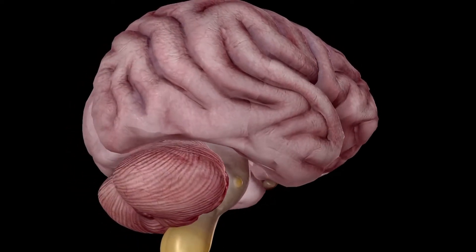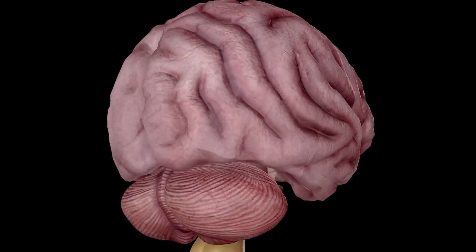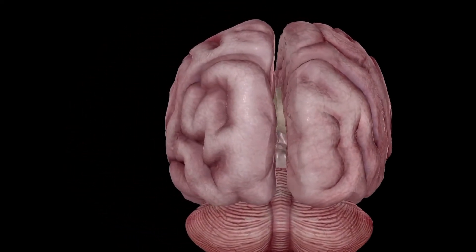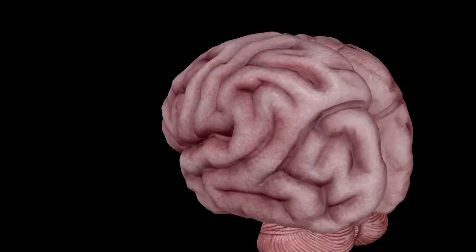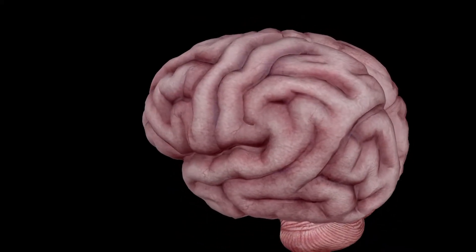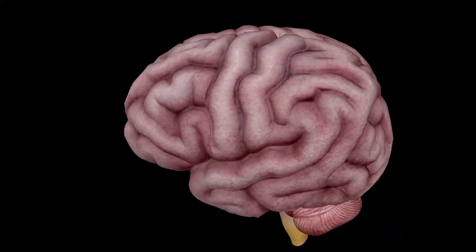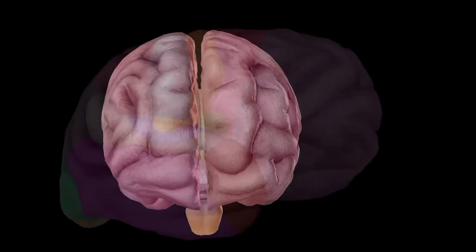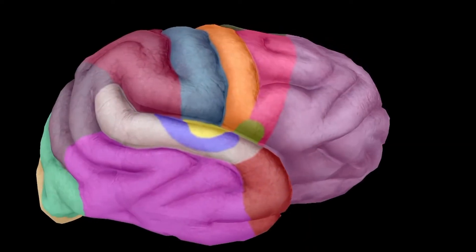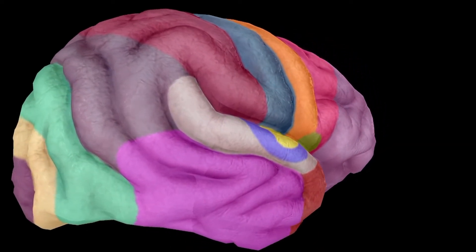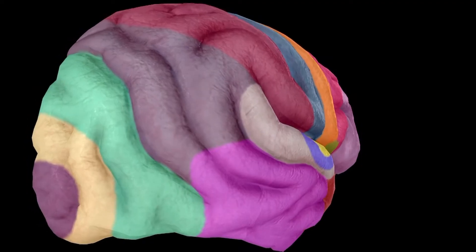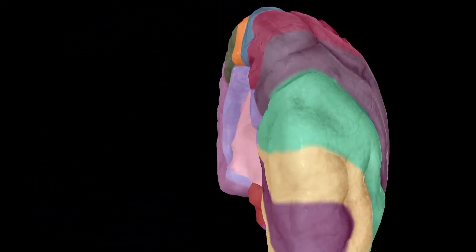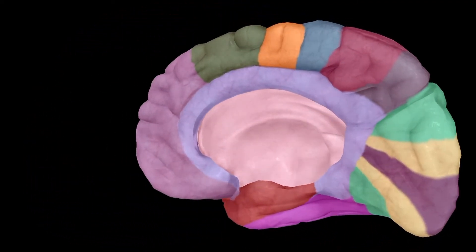The brain is the most complex organ in your body. It's your command center, exerting control over autonomic functions like breathing, the beating of your heart, muscle activity and hormone release, while also giving you the ability to think and see and hear and interpret the world around you in a way that is completely unique to everyone else.